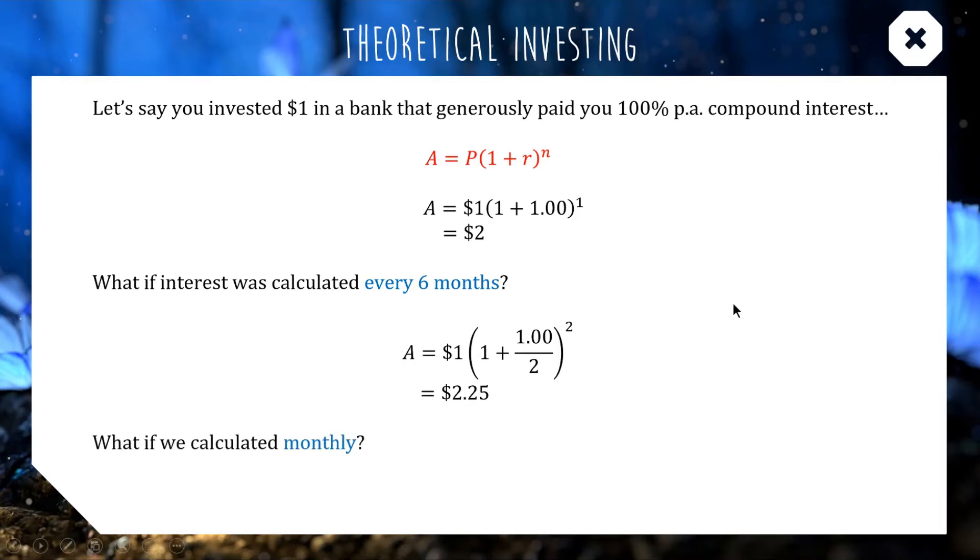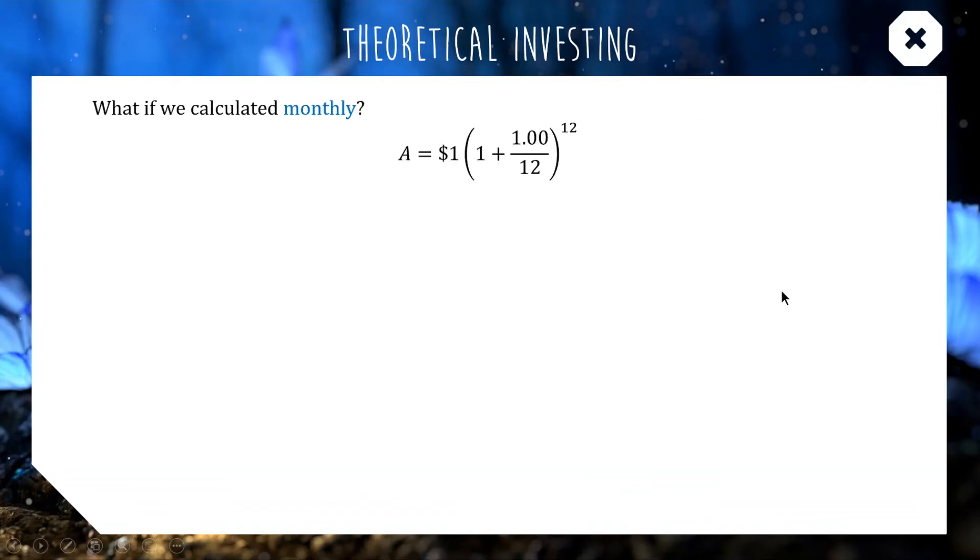What if we were even better and we were calculating our interest every month? That means we're going to divide our interest rates into 12 monthly interest rates. And instead of doing one year, we're going to do 12 months. So, we're going to do the power of 12. That calculation works out to be about $2.61. So, now we're getting even more money from our $1 investment. What if we got even more serious and we calculated our interest every single day? So, our calculation now looked like this. Dividing by 365 for a per day rate to the power of 365 days. We get even more cash. We get $2.71.